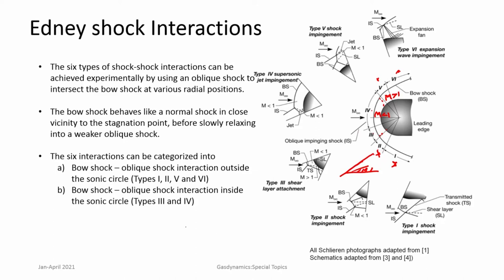We will go through the physical flow features of these interactions. What is important is that due to shock-shock interaction, there are resulting shocks from the interaction which impinge on the body. In the case of type 3 and type 4 interactions, shear layers or supersonic jets impinge on the body. When such discontinuities or supersonic jets impinge on the body, they can cause severe heating at those locations — a consideration that must be carefully addressed while designing such bodies.